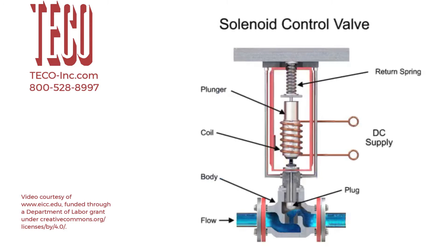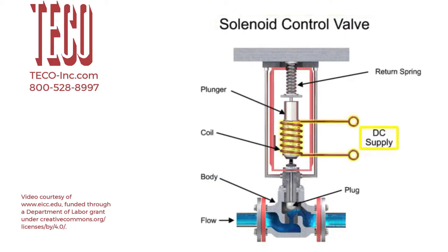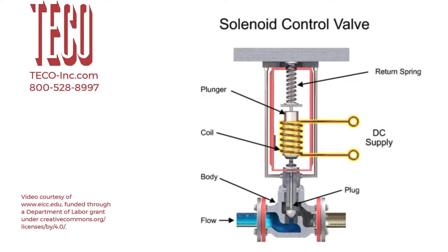For on-off control of the valve, a solenoid is used to actuate the valve to a fully closed or fully open position. Applying current to the coil generates a magnetic field that moves the plunger downward against the return spring. With zero current applied to the coil, the spring pulls the plunger upward to the fully open position for a normally open state control valve.